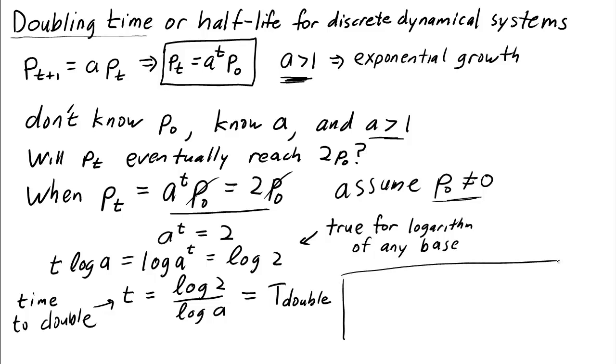So if I have another dynamical system whose solution is exponential growth, so let's say qt equals b to the power of t times q0 with b greater than 1. What is the doubling time? Well, it doesn't depend on q0, but it just depends on b and it's log 2 over log b.